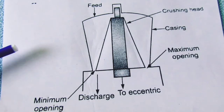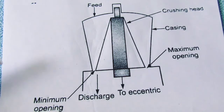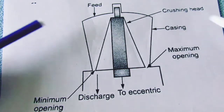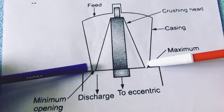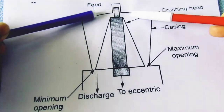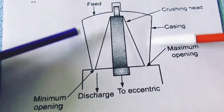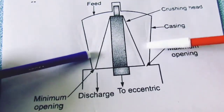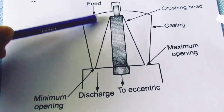So today we will see how to work with the Gyratory Crusher and which are important points that can come to your objective type questions. So this figure is the Gyratory Crusher figure. This is the side wall which we are calling casing. So this is the funnel shape — the casing is the funnel shape. It is open here and we add feed.